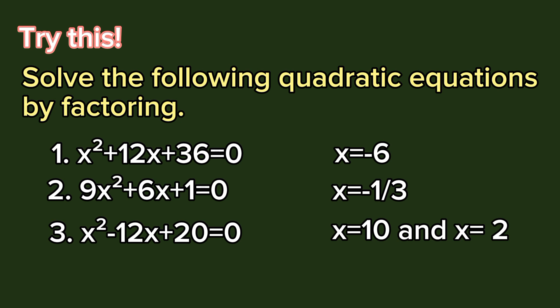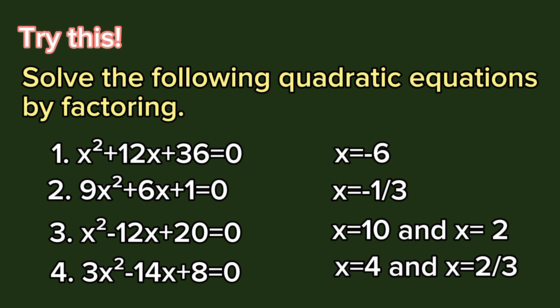Number 4: 3x² - 14x + 8 = 0. Solution: x = 4 and x = 2/3.